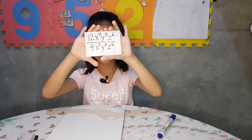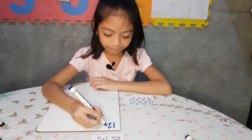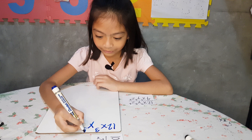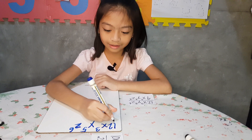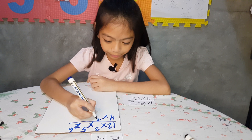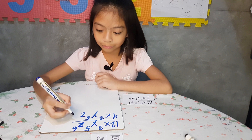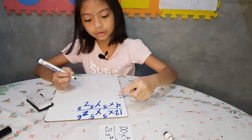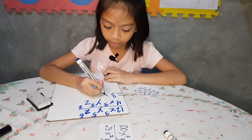Next one is this one. It's 12x cubed y to the 5th power z to the 6th power divided by 4x cubed y to the 5th power z squared. So, 12 divided by 4 equals 3, and 3 minus 3 equals 0. Don't forget to put x.